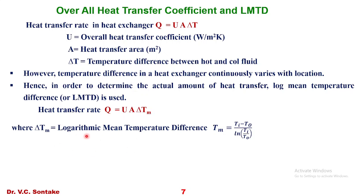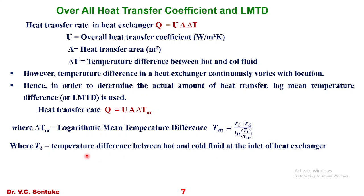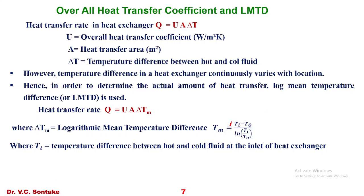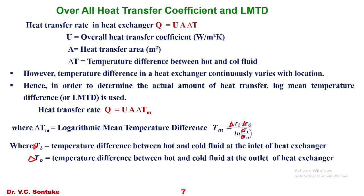So, the heat transfer rate is given by Q = U · A · ΔTm, where ΔTm is the LMTD — log mean temperature difference — given by: ΔTm = (ΔT_i − ΔT_o) / ln(ΔT_i / ΔT_o). Here, ΔT_i is the temperature difference between hot and cold fluid at the inlet of the heat exchanger, and ΔT_o is the temperature difference between hot and cold fluid at the outlet of the heat exchanger.